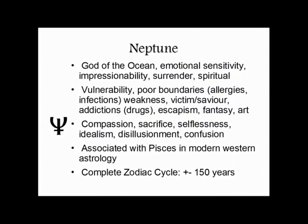Neptune is far more passive than Uranus — almost the opposite. If Uranus is something that shocks you and wakes you up, Neptune is something that drugs you and gets you into some fantasy land. Neptune is very elusive, relatively subtle. There are certain types of Neptune influence that can occur in a chart — specifically when involved in less powerful types of aspects like a sextile — that can remain almost undetected or unrecognized, partly because it operates at a relatively subtle and emotional level.